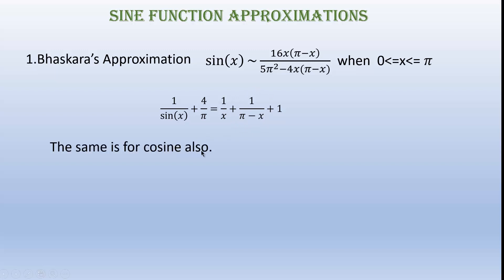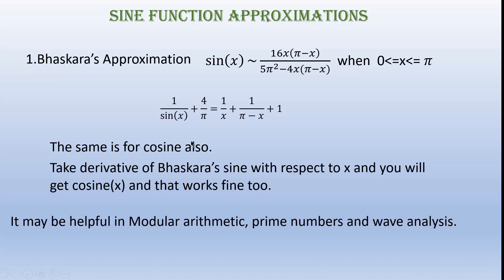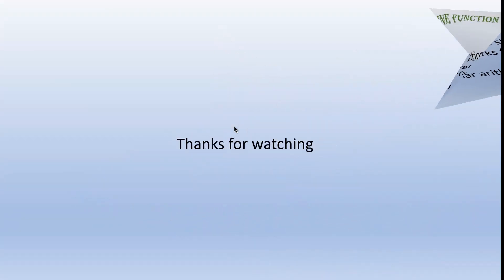The same approach applies for the cosine function as well. We know that the derivative of sine x with respect to x gives the cosine function. So if we take this expression and differentiate it with respect to x, we will get an approximation of the cosine function — not the exact value, but a good approximation. Finally, for those working in modular arithmetic, prime numbers, or acoustics and wave analysis, this can be a good result to use. Thanks for watching.